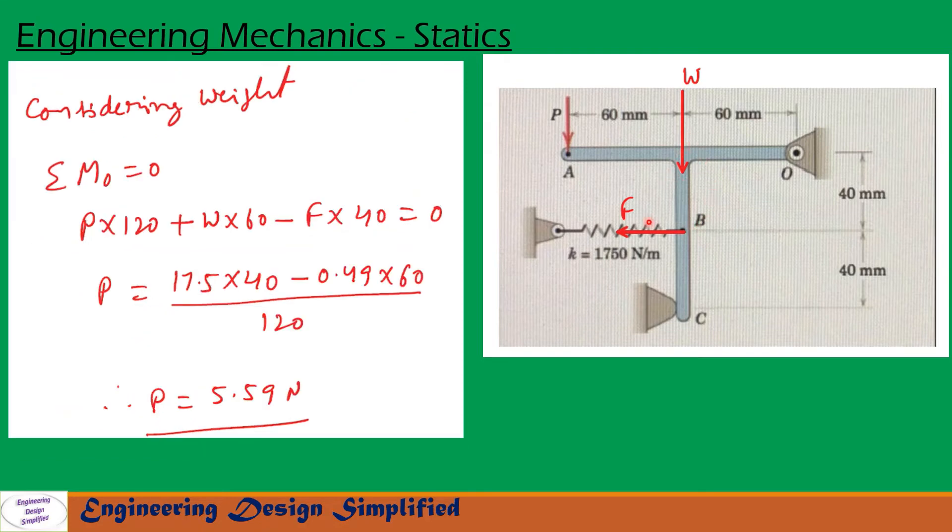In this condition, the weight of the component, this body, is going to act vertically downwards along this length. So the center of gravity must be somewhere lying on this. The force P is applied here vertically downwards, and weight will be acting vertically downwards along this, and a spring force F is acting towards left at a distance 40 mm from O.